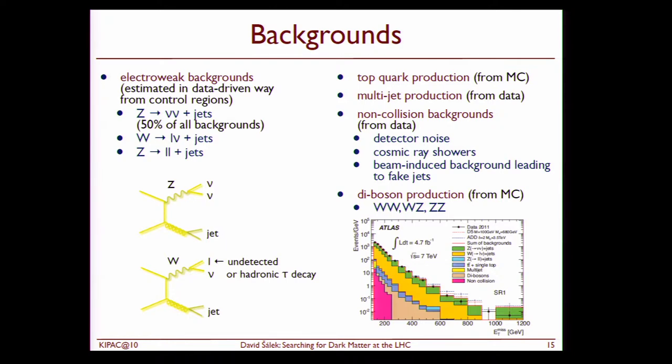We have a jet which is balanced by the pair of dark matter particles as a signal. And there are huge backgrounds to this process coming from the standard model. Namely, there is an irreducible background from Z to neutrino neutrino plus jets where you have two neutrinos and a jet exactly the same signature as you would hope for from the dark matter. And then you have also W to lepton and neutrino plus jets where actually you miss the lepton. And all this gives you roughly 80% of background. Then you have backgrounds from Z to lepton lepton, top quark, QCD, non-collision backgrounds, diboson production. These are all the processes which you have to consider in the search. And then you actually look whether you have some excess over the expectation from the standard model or not.